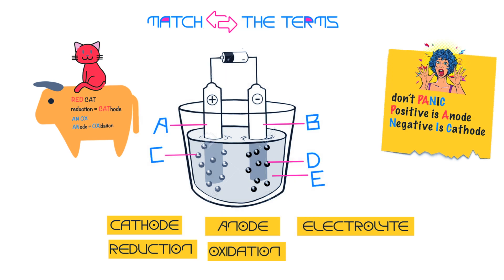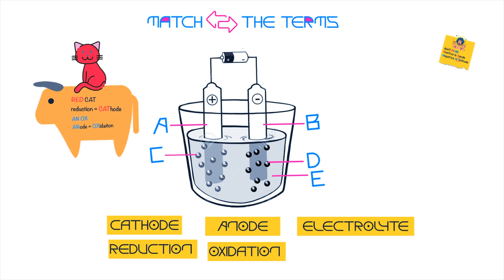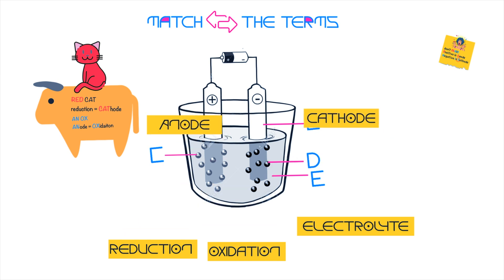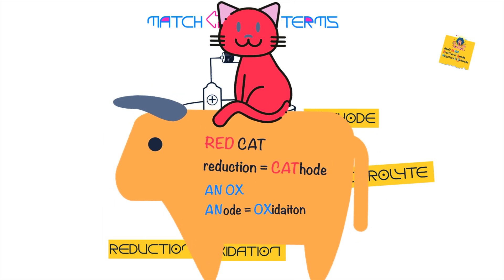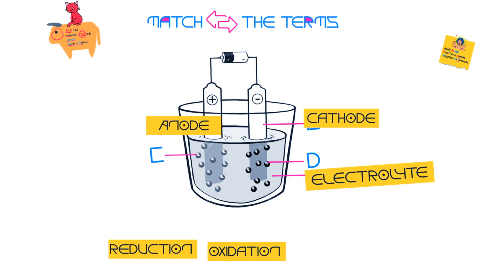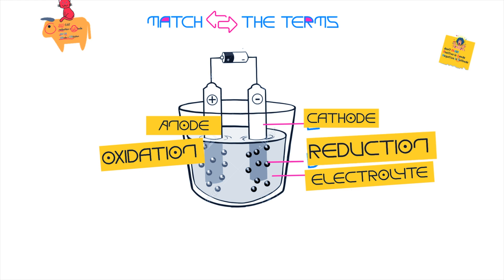Let's label the parts of the electrolysis cell. The positive electrode is the anode (label A), and the negative electrode is the cathode (label B). The solution or molten ionic compound is called the electrolyte (label E). For the processes: reduction takes place at the cathode — remembered as 'red cat' — and oxidation takes place at the anode — remembered as 'an ox.' So: anode = oxidation, cathode = reduction.